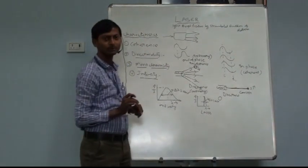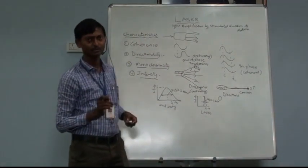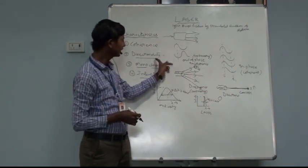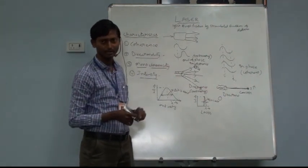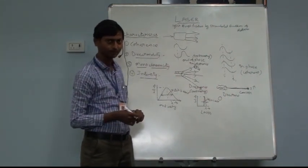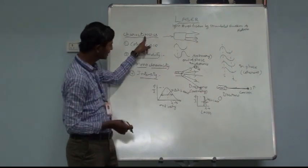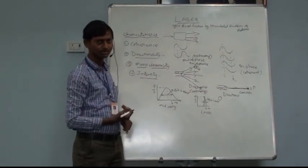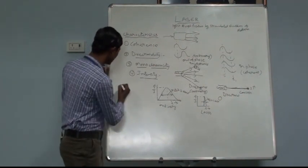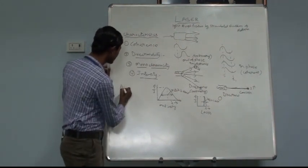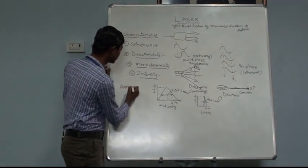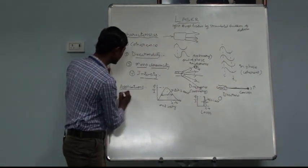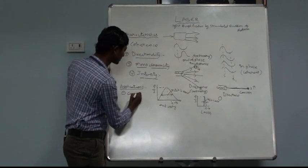These are the four important characteristic properties of laser light: coherence, directionality, monochromaticity, and intensity. Based on these characteristics, we can discuss some of the applications of laser light. Lasers have numerous applications in various fields. Let us take the field of communications.